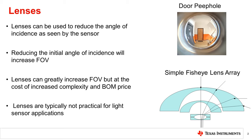Lenses can be a very effective solution for expanding the field of view, but are often not practical. A single lens can have a small effect on the field of view. However, a proper fisheye lens is actually a combination of several lenses in series. Keeping the lenses aligned relative to one another is critical for their performance, requiring high precision in system assembly, and can add a significant amount of thickness and cost to the final product. Because of the increased cost and complexity, lenses are rarely practical with ambient light sensors.